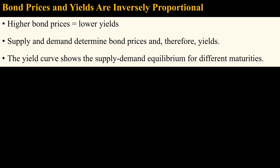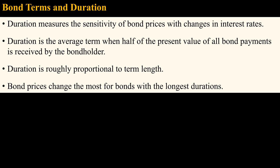To understand why bond yields vary with terms, you must understand that bond prices are inversely proportional to bond yields. The coupon rate of most bonds is fixed, so if their prices drop in the secondary market, then their yields will increase because they are paying the same coupon rate on a lower price, and vice versa. So the changes in yield over the terms of the bond occur because demand in relation to supply differs. Duration is a better measure of interest rate sensitivity, which is roughly the amount of time it would take to receive half of the present value of all bond payments. Duration is roughly proportional to the term of the bond. Since the bond term is easier to understand and is a known characteristic of the bond, yield curves are based on the terms of the bond rather than on duration.